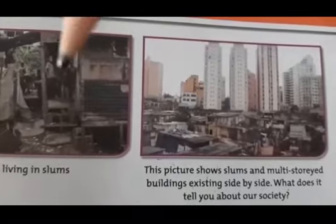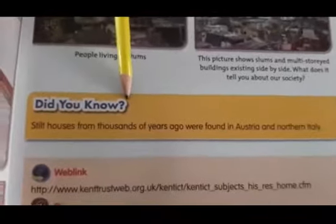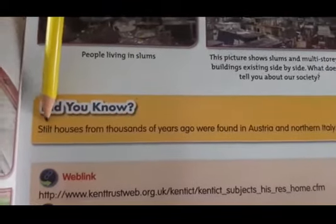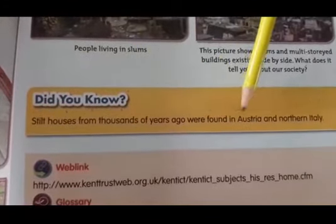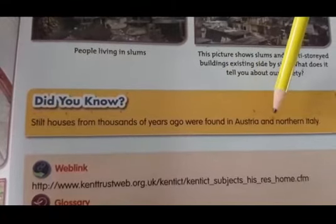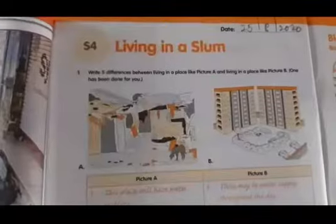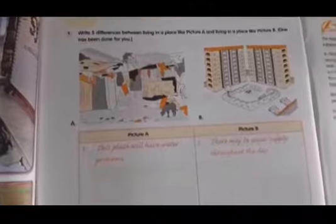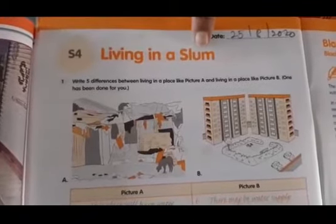Now see children, the yellow colour box — 'Did you know?' Stilt houses thousands of years ago were found in Australia and Northern Italy. It's in Chile also. Children, write today's date here: 25-8-2020. And turn to page number 22. Now, see children — S4, Living in a Slum.